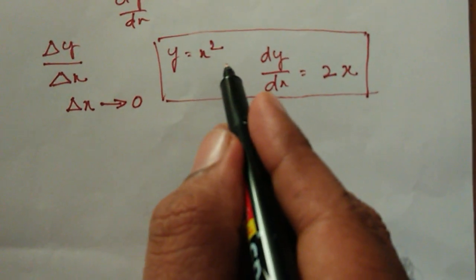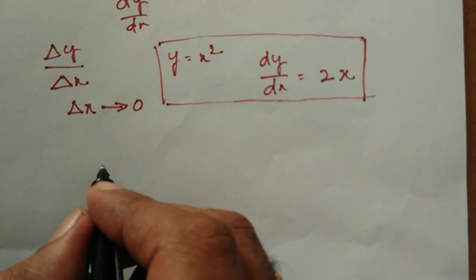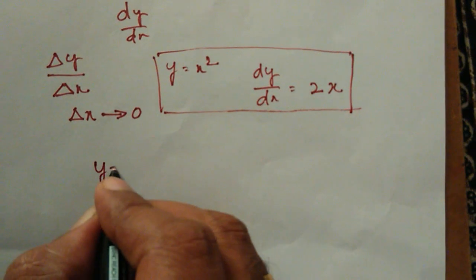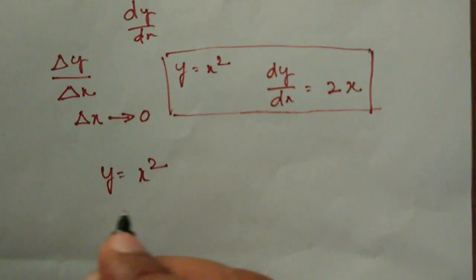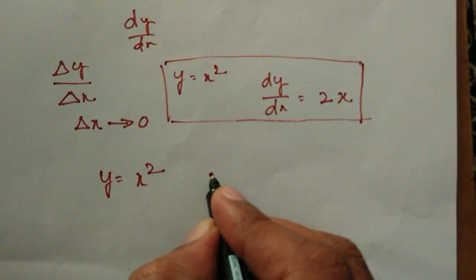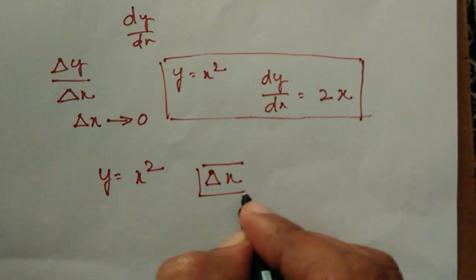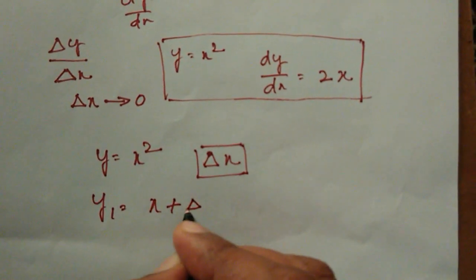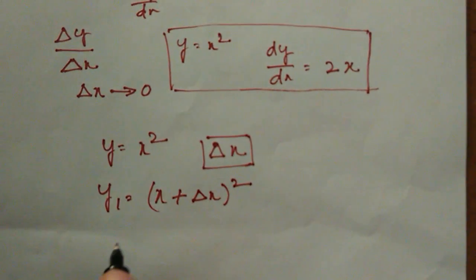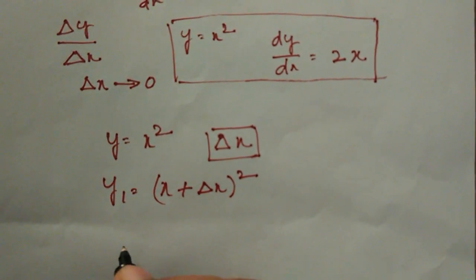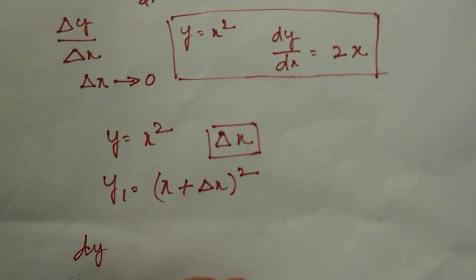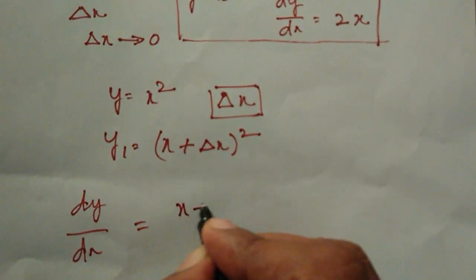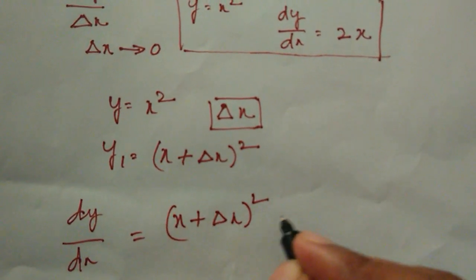For this example where y is equal to x square, dy by dx is 2x, so let us see how we arrive at 2x. So y is equal to x square. Let the change in x be delta x. Now what is y1? y1 will be x plus delta x, all squared. So dy by dx is equal to x plus delta x squared minus x square.